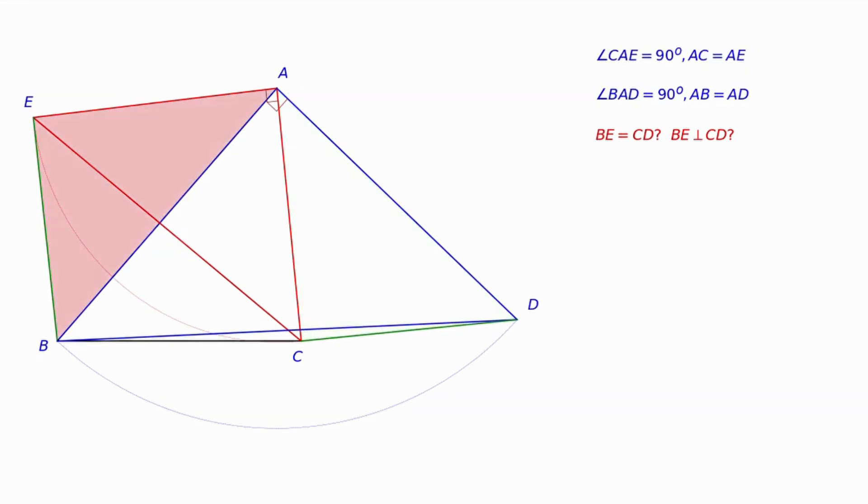Looking at two triangles ABE and ADC, we will show that they are congruent. It means all three corresponding sides are equal and the three corresponding angles are equal in measure.